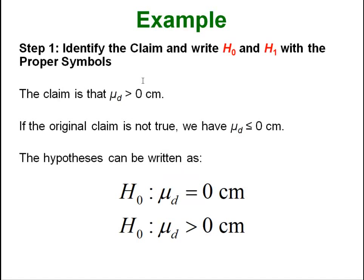Step 1, identify the claim and write our hypotheses. The claim was that the differences were greater than zero. The opposite of that is that they are less than or equal to zero. We set our null to be the equal part or our alternative to be the greater than. Once again, this ends up being our claim. That is not the rule. It just happens to be that most of the examples we are looking at are set up this way.